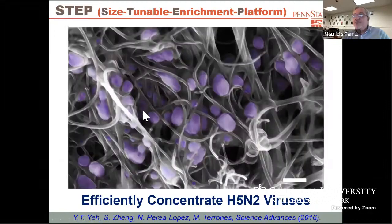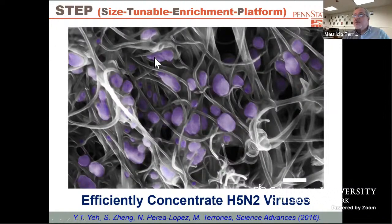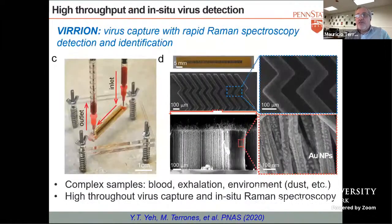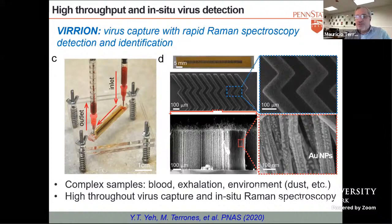Here you see an SEM image of the viruses. This is H5N2 that we have enriched and trapped. Some of the viruses adhere very well to the carbon nanotubes. We have a technology to enrich viruses, and that's the technology we're currently using together with Raman spectroscopy — an optical technique — to detect them.